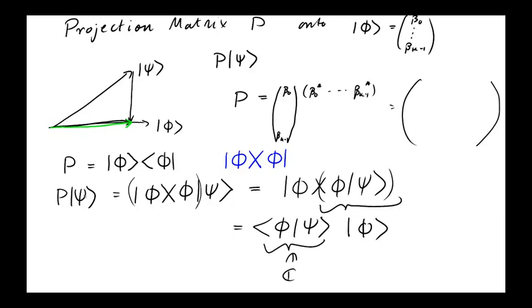The inner product is a complex number times φ. So what this tells us is when you project ψ, when you apply this projection operator onto the state ψ, you get the state φ - it's a scaled version and what's it scaled by? It's scaled exactly by the inner product.